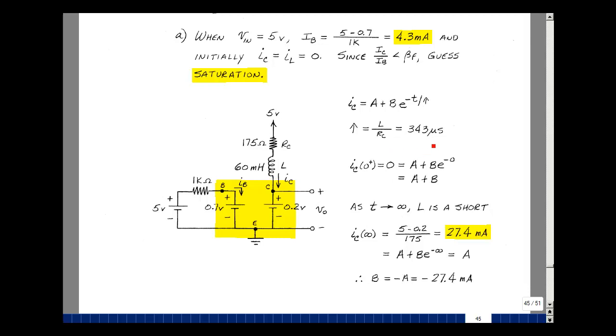So the ratio of this inductance to this resistance is 343 microseconds. The value of the current in the inductor at 0 minus was 0, so it must be the same as 0 plus. If we wait long enough as t approaches infinity, this inductor will become a short circuit, and the current is 5 volts minus 0.2 divided by 175 ohms, and that's 27.4 milliamps. So a is 27.4 milliamps, and b is minus 27.4 milliamps.